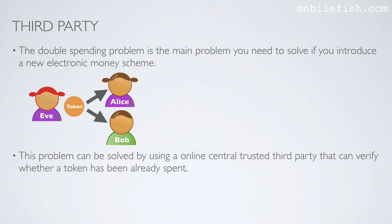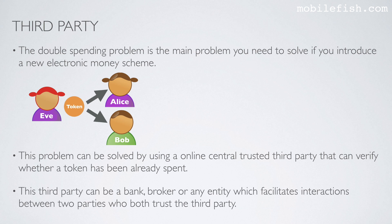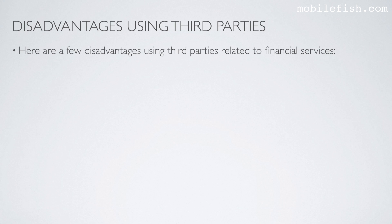This problem can be solved by using an online central trusted third party that can verify whether a token has already been spent. This party can be a bank, broker, or any entity which facilitates interactions between two parties who both trust the third party. However, there are disadvantages to using third parties.